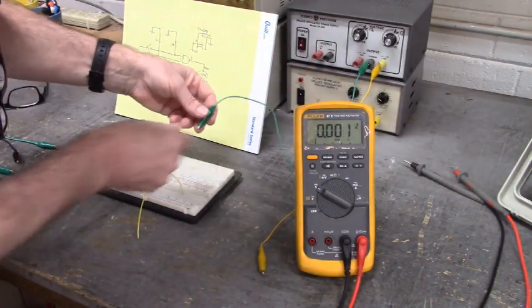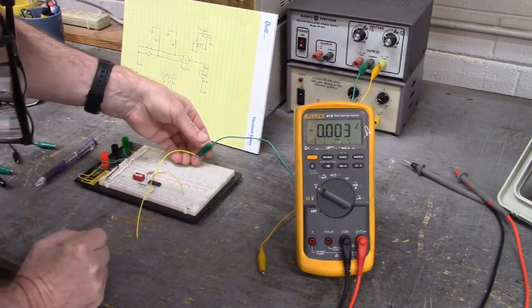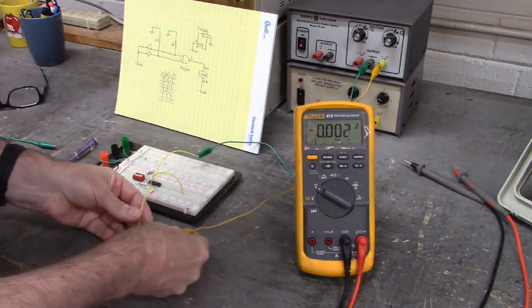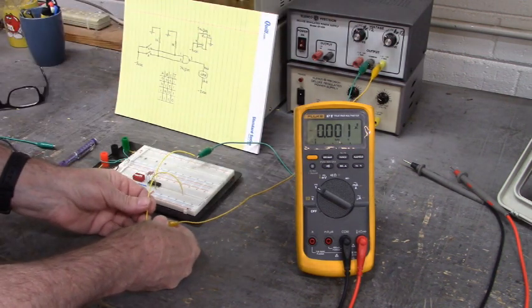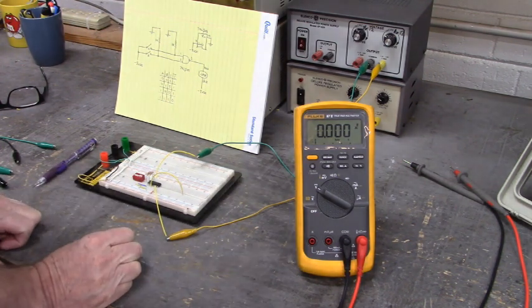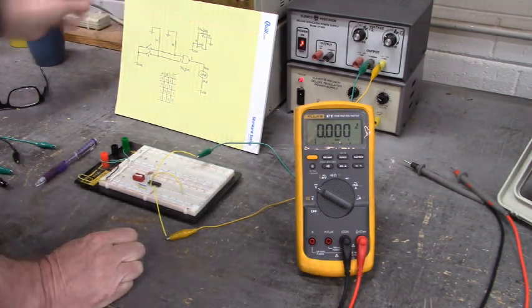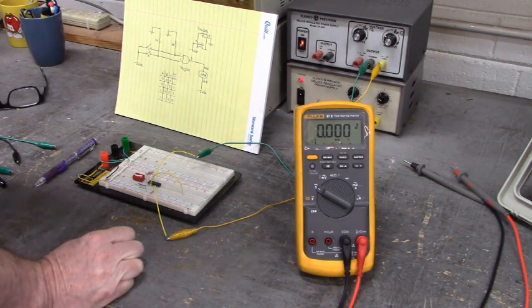Connecting ground to pin 14 VCC of the IC. Connecting negative five volts to pin seven ground of the IC. Let's see. We are powered up. No smoke. That must be good.